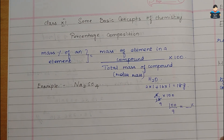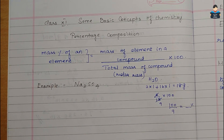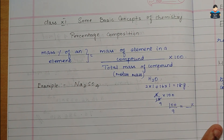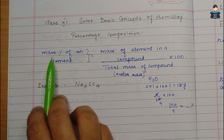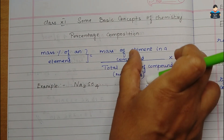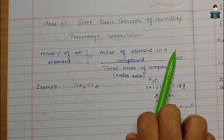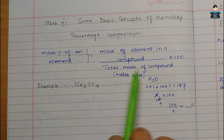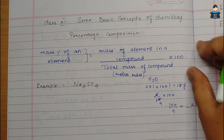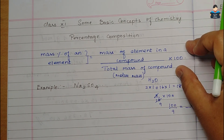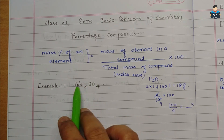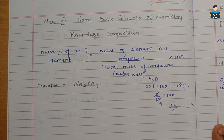So the percentage composition tells us what percentage of a particular element is present in a compound. The formula is: mass percentage of an element = (mass of the element in the compound / total mass of the compound, i.e., molar mass) × 100.